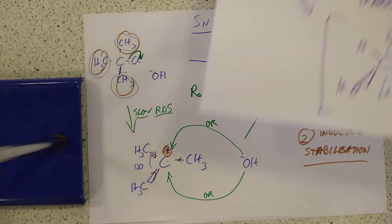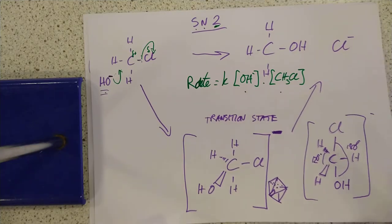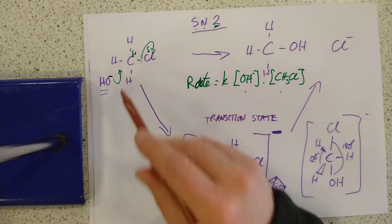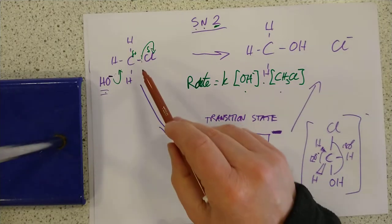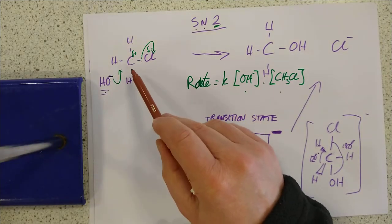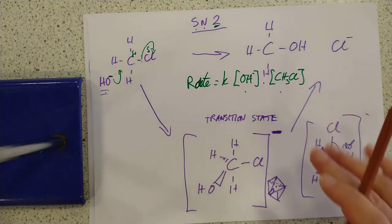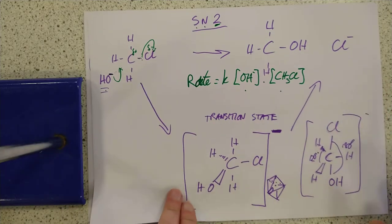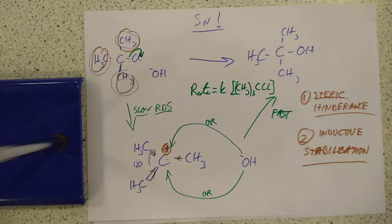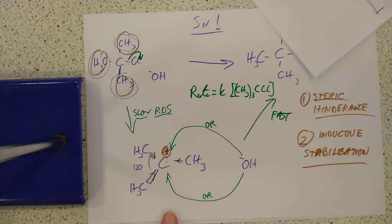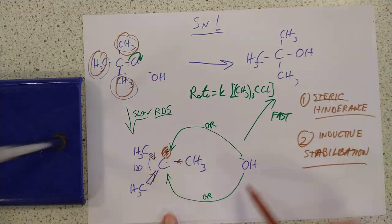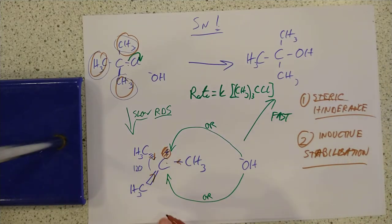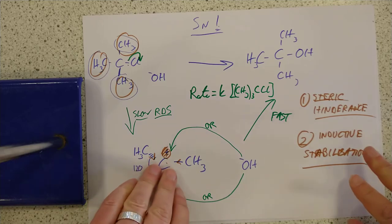So at the chloromethane end, the hydroxide could easily attack and there was no way that carbon was going to survive as a plus charge — so it just happens in one stage. Whereas in the tertiary substrate this happens in a two-stage reaction: first you form the carbocation intermediate, then you attack with the OH⁻. Those are the reasons why one mechanism occurs versus the other.